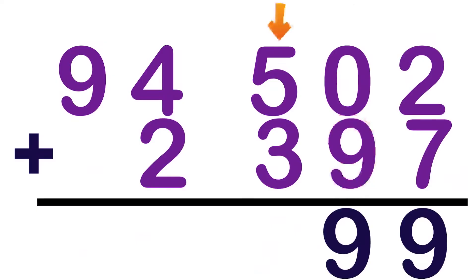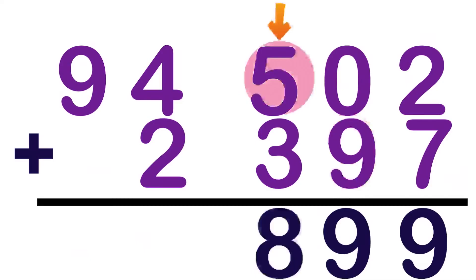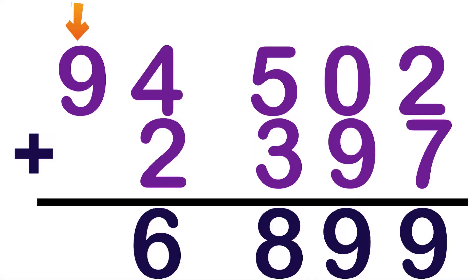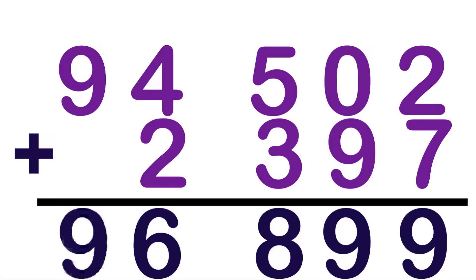How about 5 plus 3? 5 on your mind: 5, 6, 7, 8. So, 5 plus 3 equals 8. How about 4 plus 2? 4 on your mind: 4, 5, 6. So, 4 plus 2 equals 6. Then lastly, digit 9 — we will bring it down. So, the sum of 94,502 and 2,397 is 96,899.